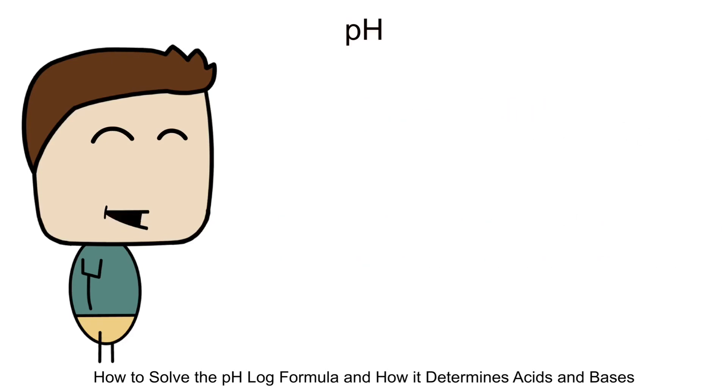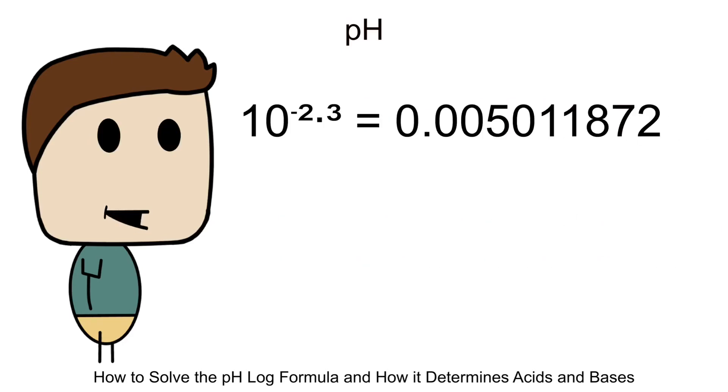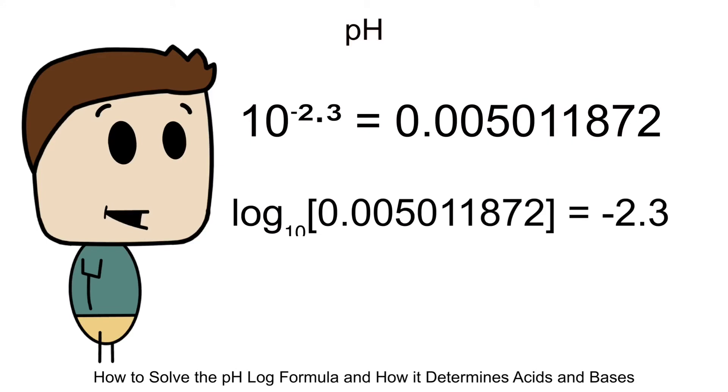Here's another more complicated version. 10 to the power of negative 2.3 would equal 0.005011872. Let's see what it looks like as a logarithm expression. Log of base 10 of 0.005011872 equals negative 2.3. Base 10 from the log is the same 10 from the exponential equation. This long decimal number is the same number that results from 10 to the power of negative 2.3. The resulting negative 2.3 here is the same as the power of negative 2.3.